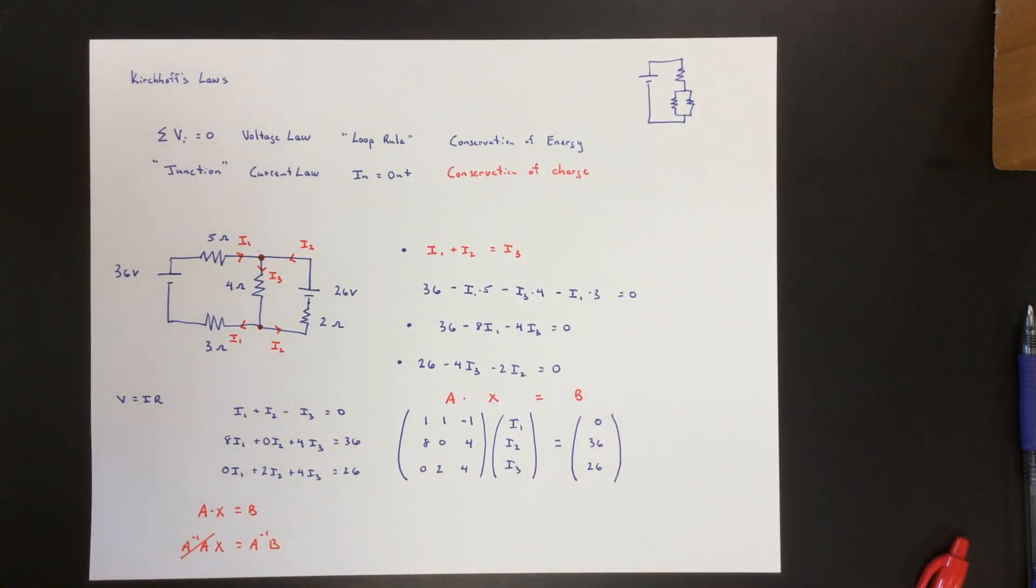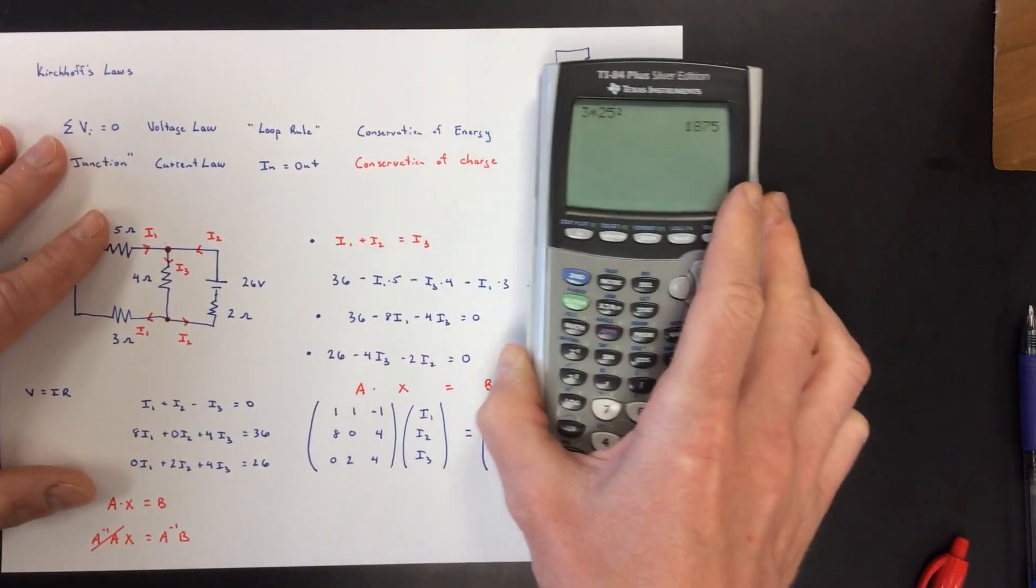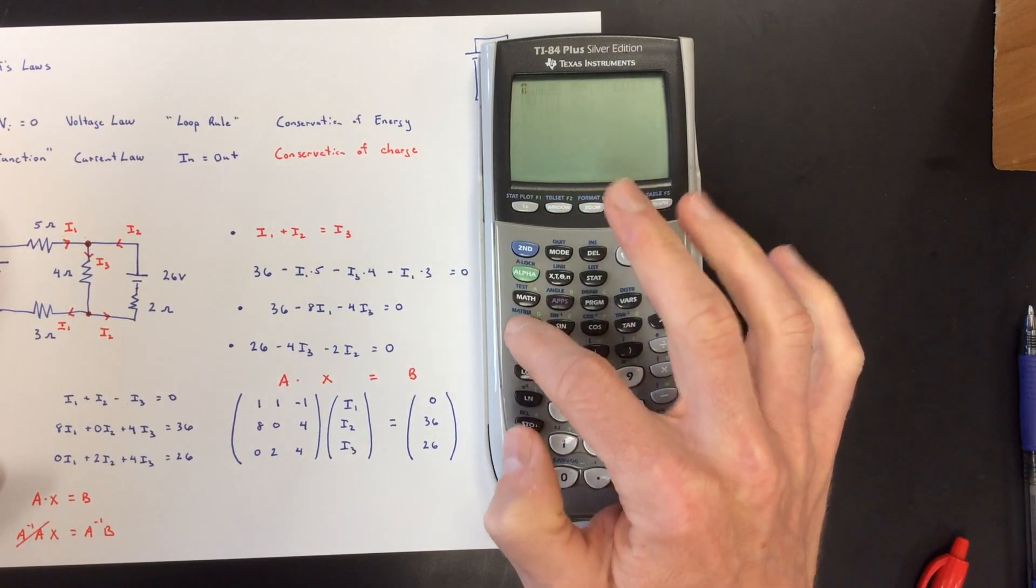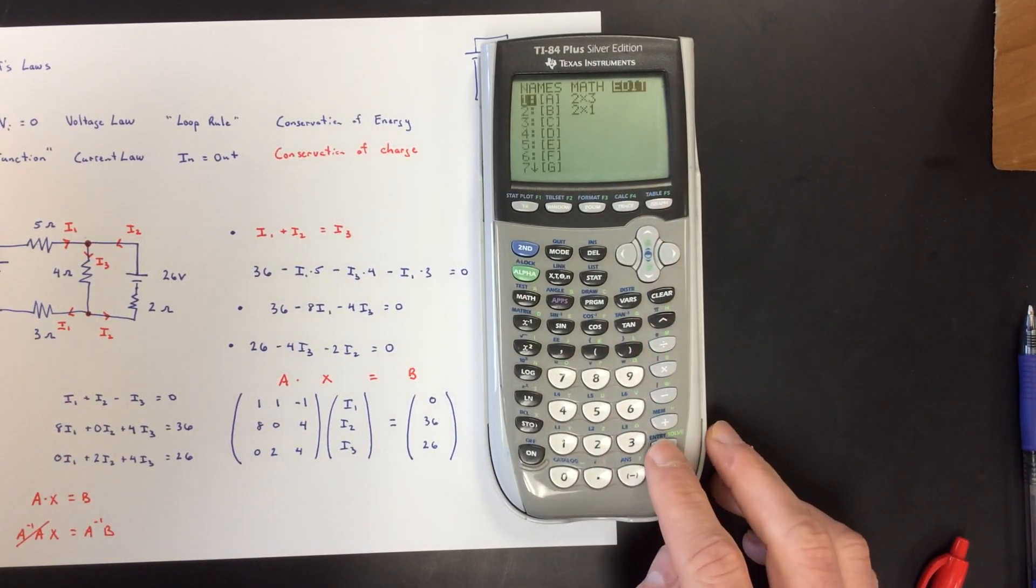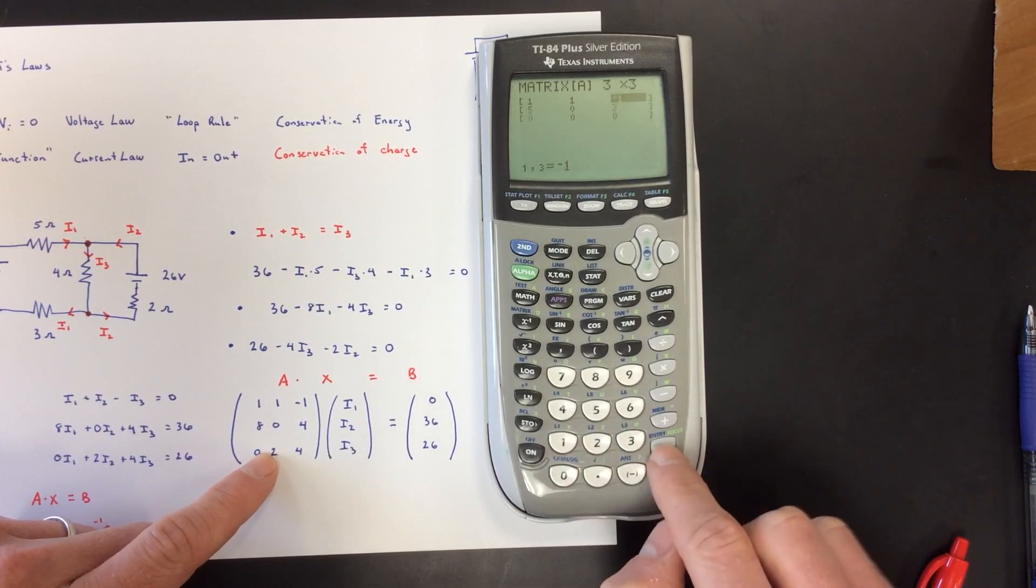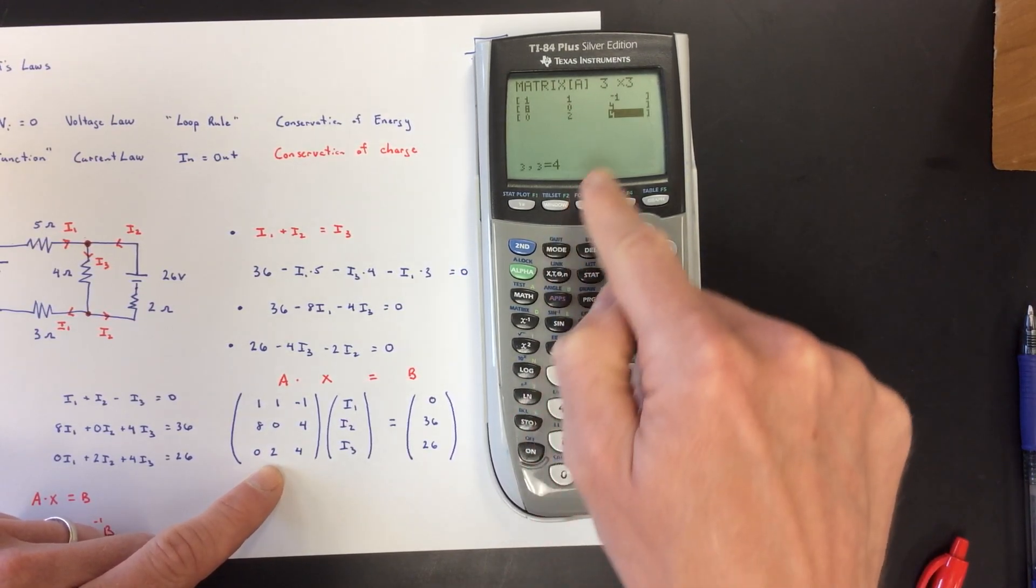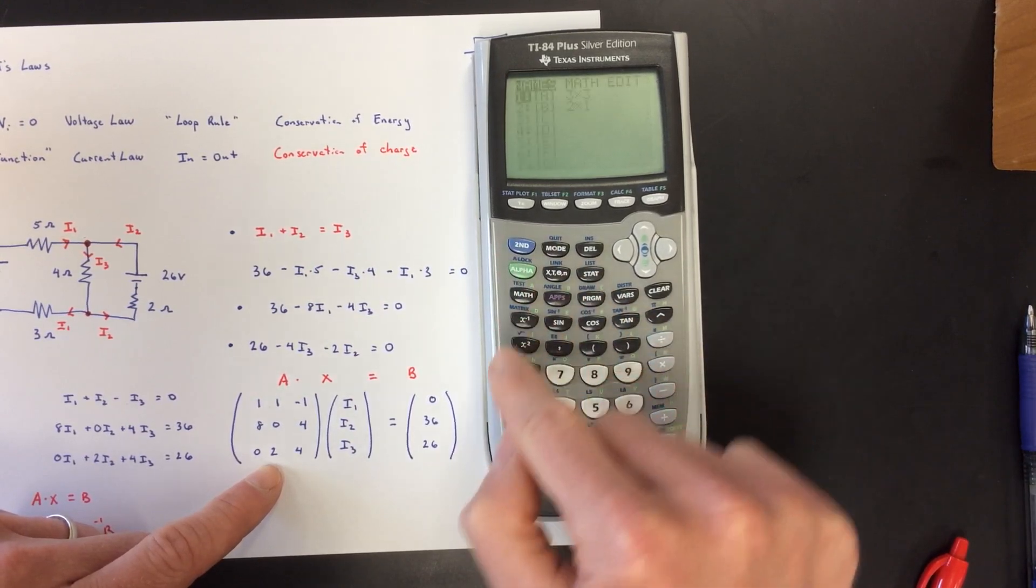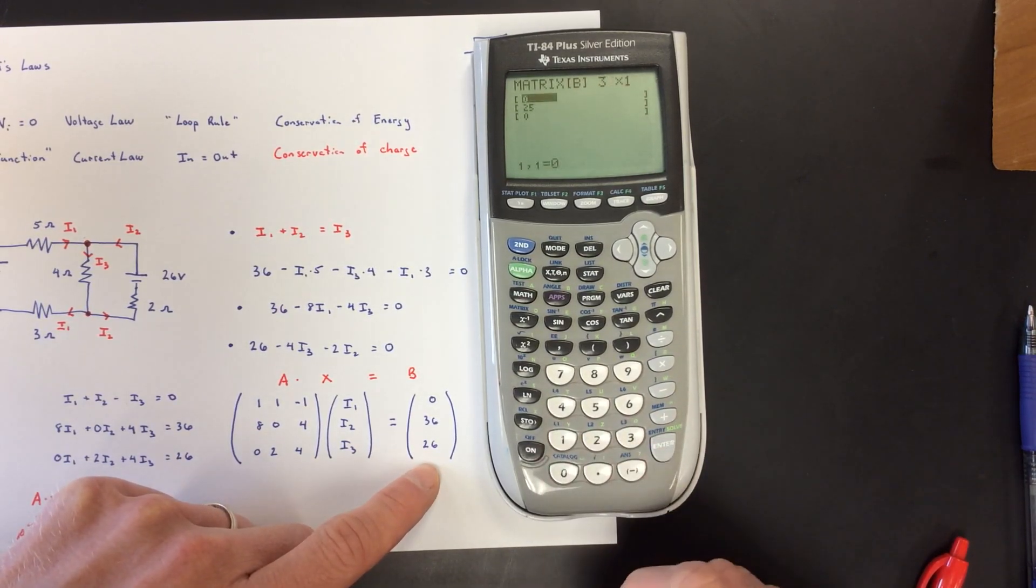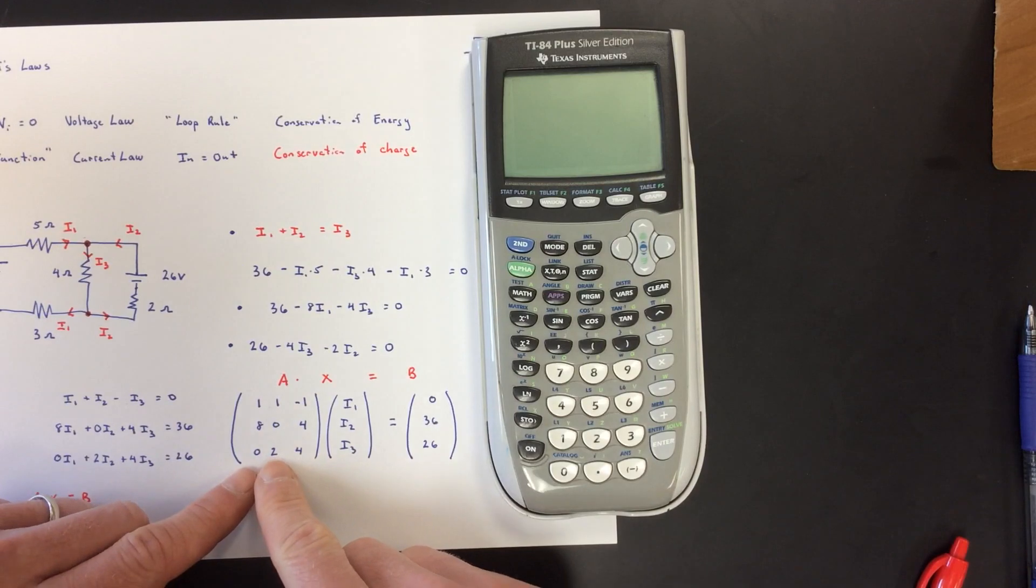We can go ahead and do this. Hit second matrix, and then go to edit. So I'm scrolling over to edit, and I want to make matrix A. Matrix A is a three by three, and then it's one, one, negative one, eight, zero, four, and then the last line is zero, two, four. I've told it what matrix A is. Quit, back into matrix. Now I want to edit matrix B. Matrix B is a three by one, and it is zero, 36, 26. Get out of there. So now your calculator knows matrix A and matrix B.